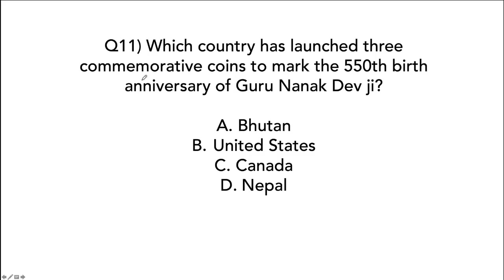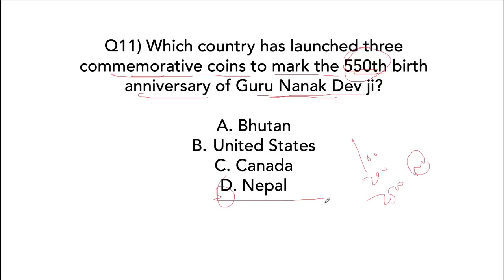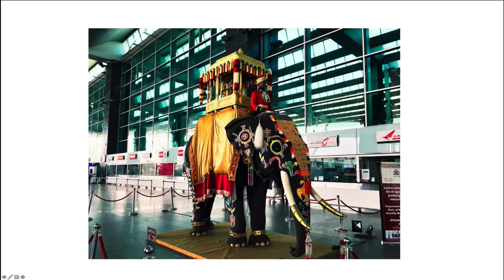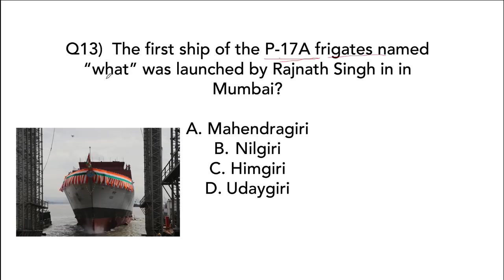Nepal will launch three commemorative coins — 100, 200 and 2500 Nepali Rupee denominations — to mark the 550th birth anniversary of Guru Nanak Dev Ji. Bangalore International Airport has installed a large statue of an elephant in front of the airport on the occasion of Dasara. The first ship of the P-17A frigate series is named Nilgiri and the seventh ship is Mahendragiri — don't get confused between the two.